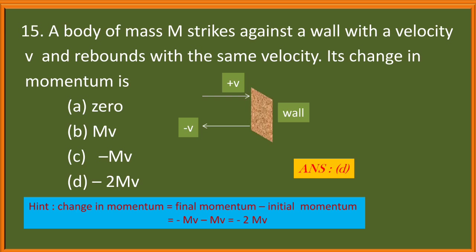Now come to the last question. When a body of mass M strikes against a wall with a velocity V and rebounds with the same velocity, its change in momentum is: 0, MV, minus MV, minus 2MV. So here you can see in the figure the velocity is taken as positive when it is moving towards the wall, and when it rebounds then its velocity is minus V. So in first case initial momentum will be MV and final momentum will be minus MV. So change in momentum equal to final momentum minus initial momentum and it will be minus 2MV. So your correct answer here is option D, minus 2MV.